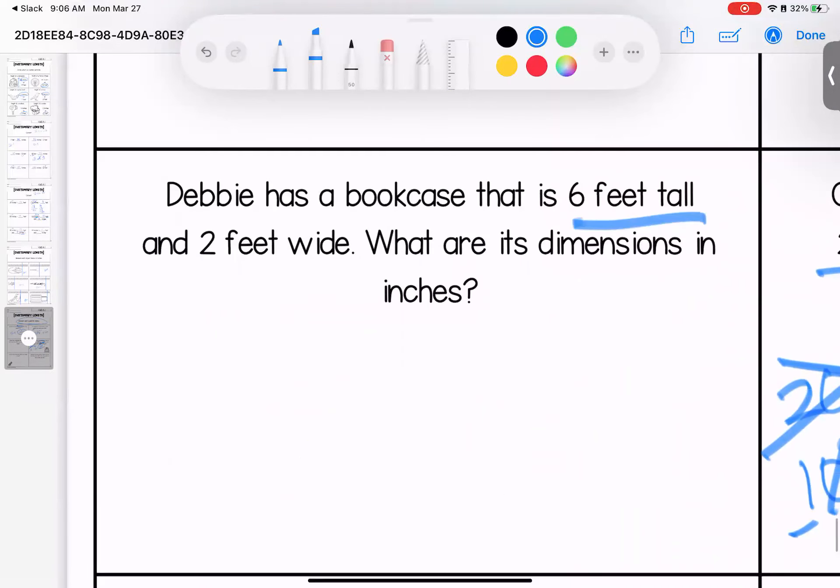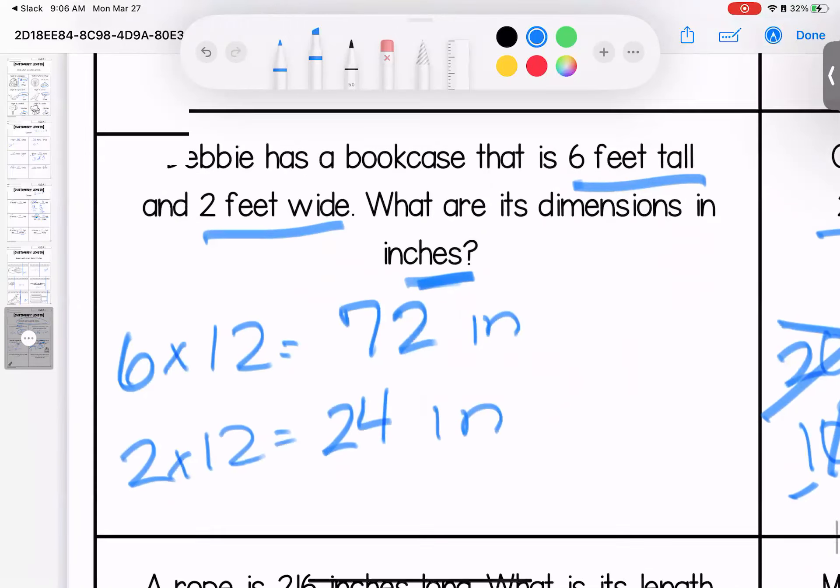Debbie has a bookcase that is 6 feet tall and 2 feet wide. What are its dimensions in inches? This time I wanted you to do both. So 6 times 12 gives me the inches and 2 times 12 gives me the inches. 2 times 12 is 24. 6 times 12 is 72. So 72 inches by 24 inches.